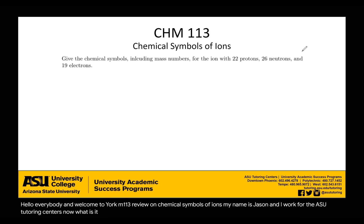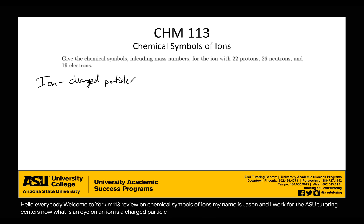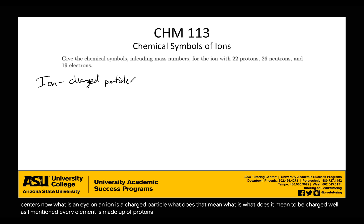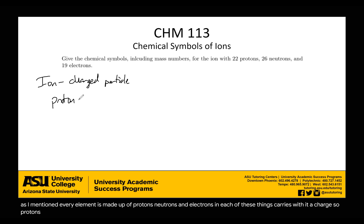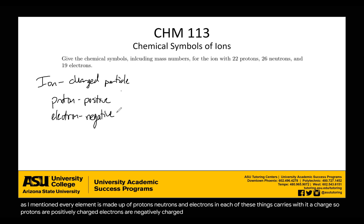What is an ion? An ion is a charged particle. What does it mean to be charged? Every element is made up of protons, neutrons, and electrons, and each of these carries a charge. Protons are positively charged, electrons are negatively charged, and neutrons are neutral.